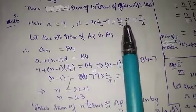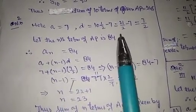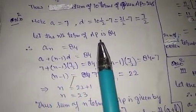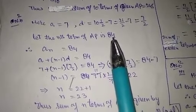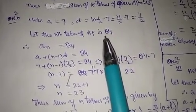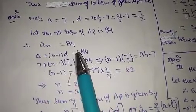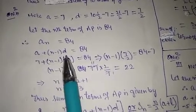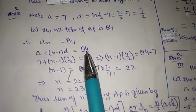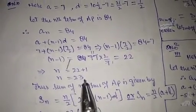Now we need to find the number of terms, after which we can find the sum. Let the nth term of the AP be 84, because the last term of the AP is given as 84. That is, an = 84. Using the formula an = a + (n−1)d = 84, we get n is equal to 23.